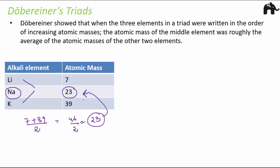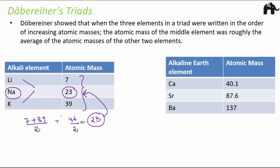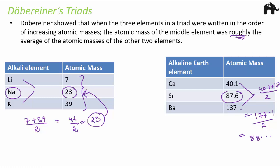Döbereiner's triads confirmed a relationship between atomic mass and properties, since all three elements in a triad shared similar chemical properties and showed this atomic mass pattern. This was true for all of Döbereiner's triads. For example, the atomic mass of strontium is 87.6. Taking the average of calcium (40.1) and barium (137), we get 177.1 ÷ 2 = 88.55, which is roughly the atomic mass of strontium. So it is not the exact average, but roughly the average of the atomic masses of the other two elements.